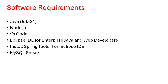Java 21 is the foundation for building our backend services. Node.js is a runtime environment for executing JavaScript — it is crucial for front-end development and build processes. VS Code is a lightweight and powerful code editor for seamless front-end and backend development. Eclipse IDE for enterprise Java and web developers is a primary tool for writing, debugging and running Java-based applications. Spring Tools is a plugin to supercharge Eclipse with the Spring framework, helping us create robust backend systems. MySQL server is a relational database management system to store and manage our application data.